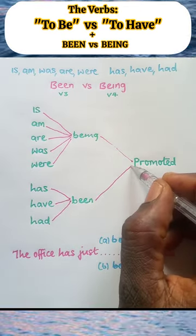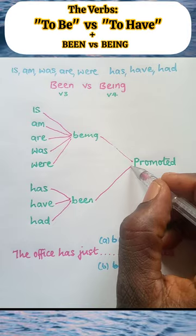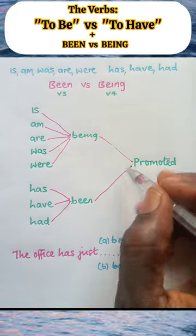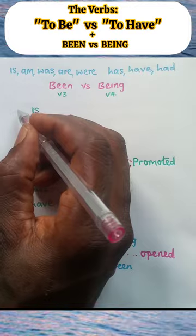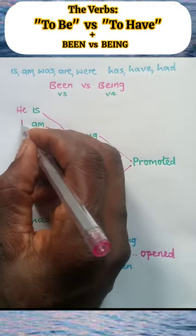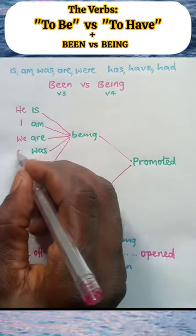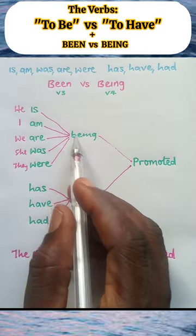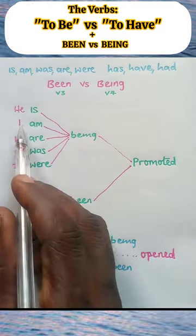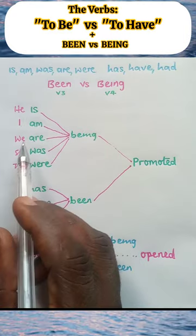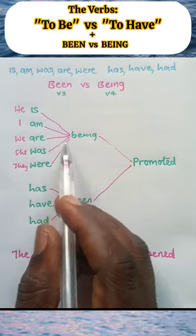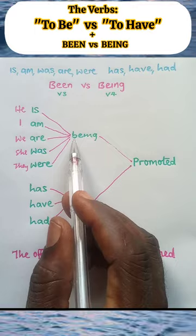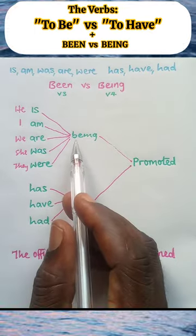Now let us add subjective pronouns as the subject to form complete sentences. We have: he is, I am, we are, she was, they were. It goes this: he is being promoted, I am being promoted, we are being promoted, she was being promoted, they were being promoted.